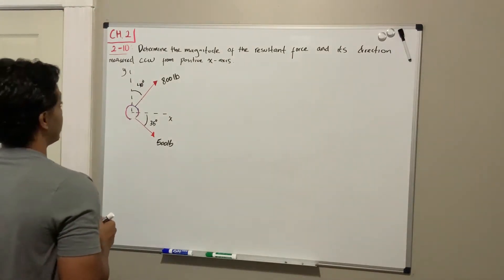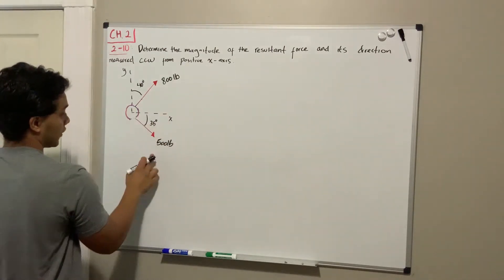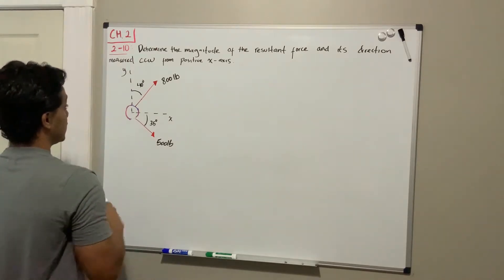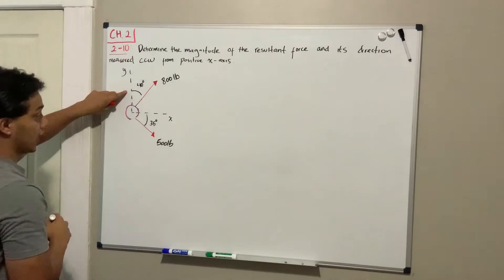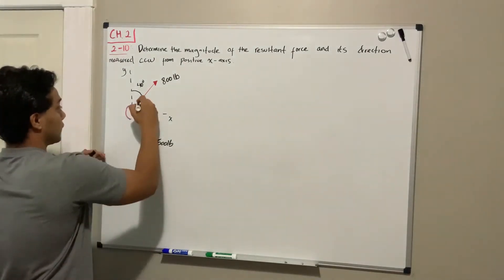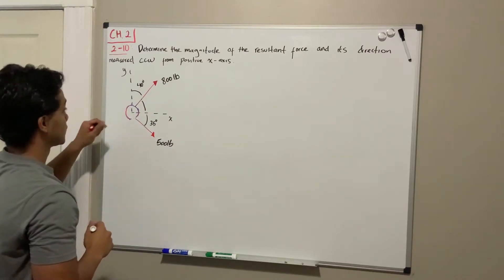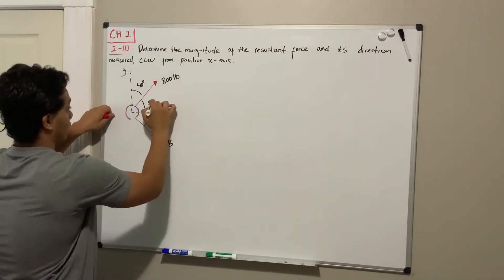First of all we got these two forces, this 800 pounds going up on right and 500 pounds going down on right. For these 800 pounds you're giving us the angle with respect to the y-axis. I usually like to work with the angle with respect to the x-axis, so if this angle is 40, this angle over here is gonna be 50 because between the y and the x-axis there is 90 degrees.